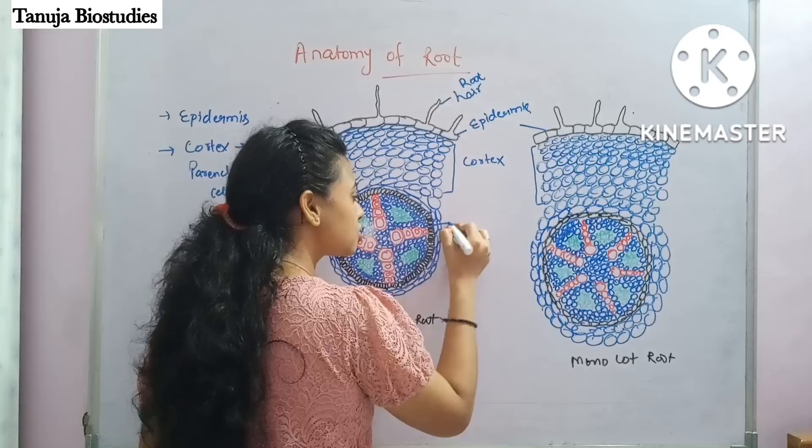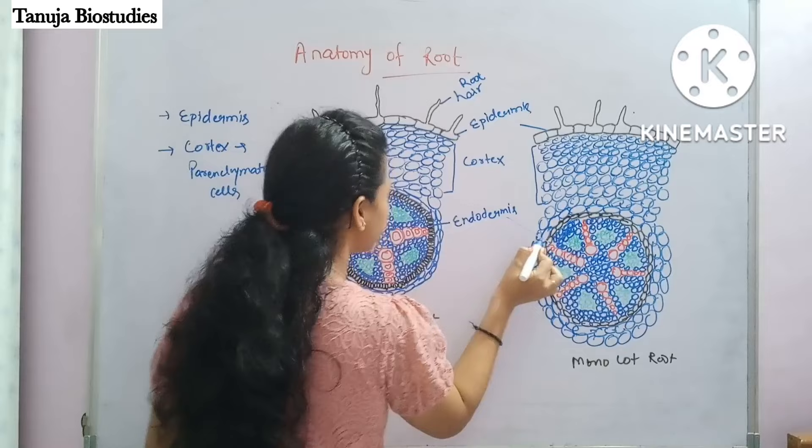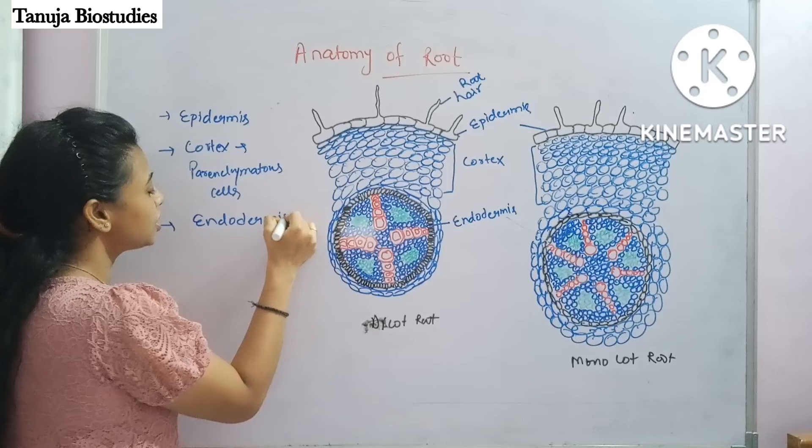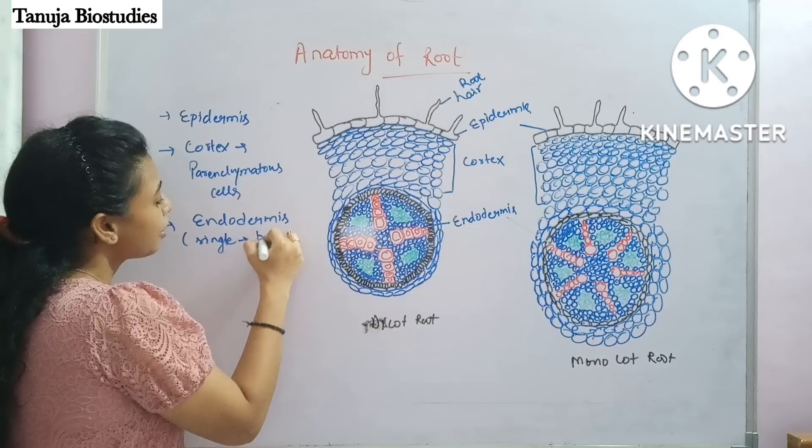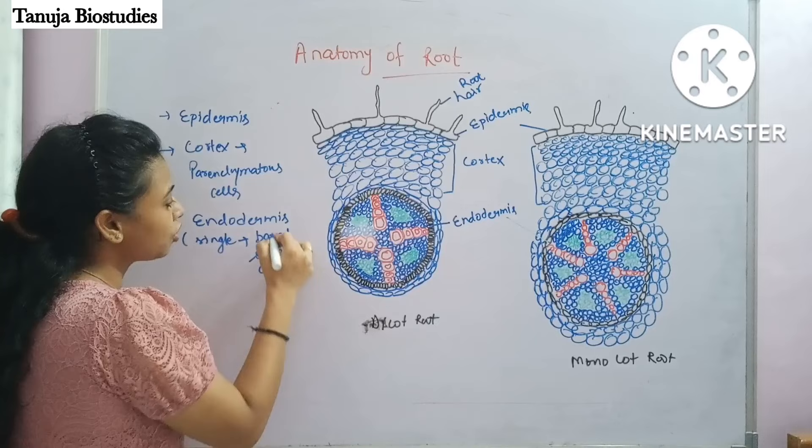The inner layer within the cortex is called the endodermis. This is our third point. The endodermis is made up of parenchymatous cells — it is a single layer of barrel-shaped cells, which you can see in the figure.